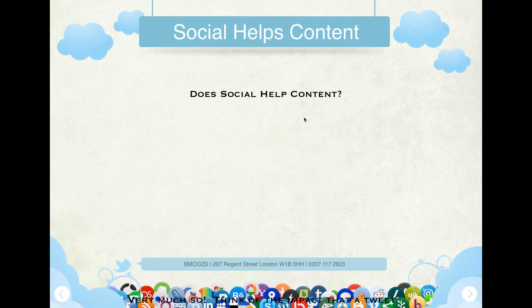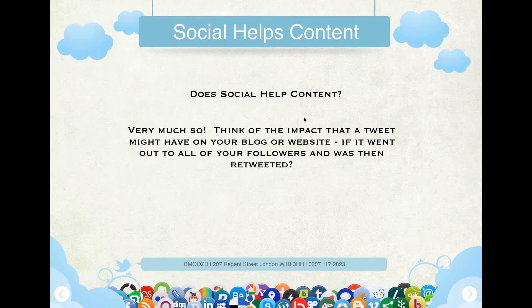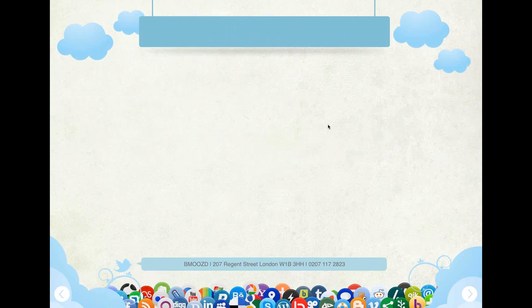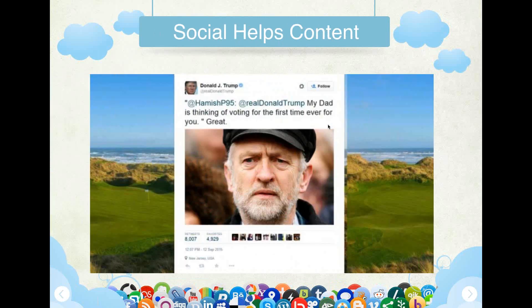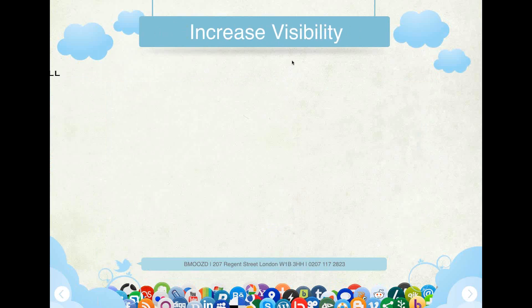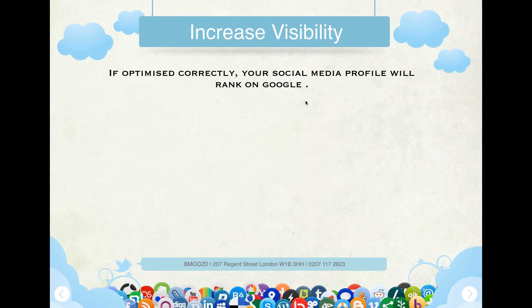Social media helps content. Think of the impact that a tweet might have on your blog or website if it went out to all of your followers and was then retweeted. Here's an example of a social media post and the retweets — they've got 8,007 retweets and 4,929 people favorited that on Twitter. If optimized correctly, your social media profile will rank on Google.